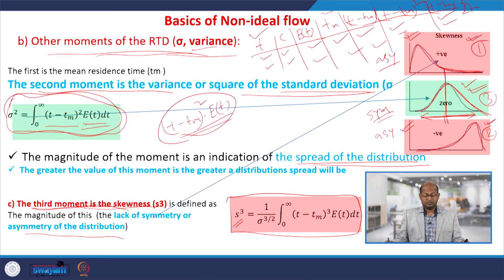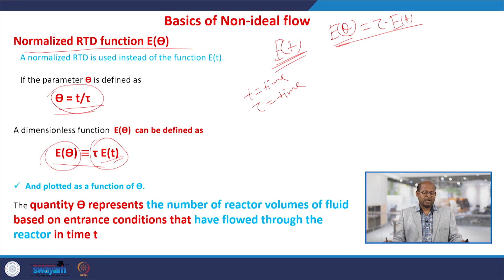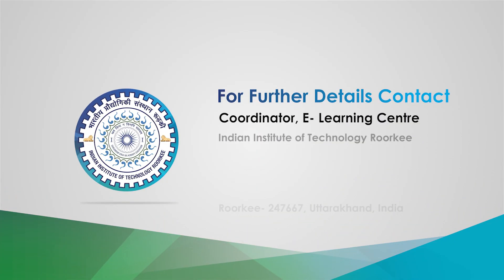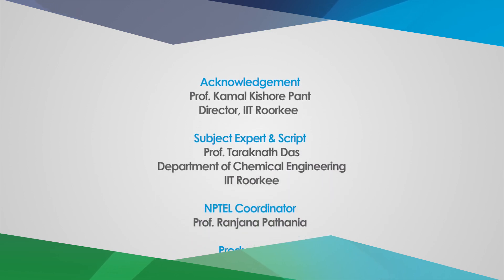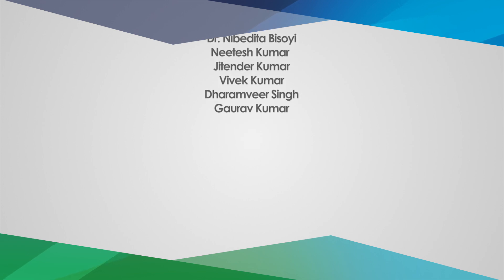Today we studied step tracer test or step tracer experiments, and how to find various parameters: mean time, space time, standard deviation σ², and how to calculate them experimentally. We also performed the normalization of the RTD functions — E(θ) — which we discussed. Next class we will discuss something else. Thank you.